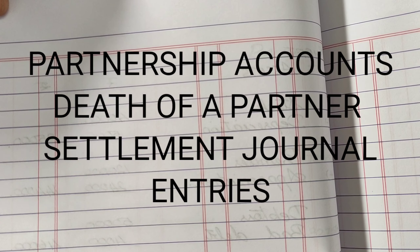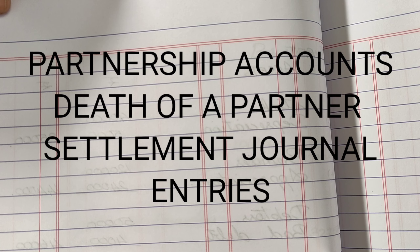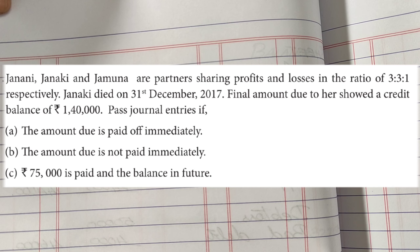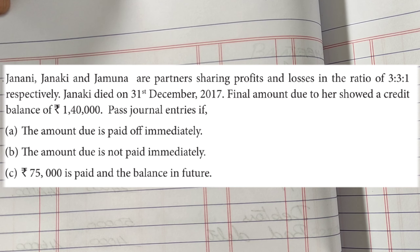In this video, let us have a look at a journal entry sum — how we are going to record the death of a partner's settlement. Janani, Janaki, and Jamuna are partners sharing profits and losses in the ratio 3:3:1 respectively. Janaki died on 31st December 2017, and the final amount due to her showed a credit balance of 1,40,000. We need to pass journal entries for 3 cases.